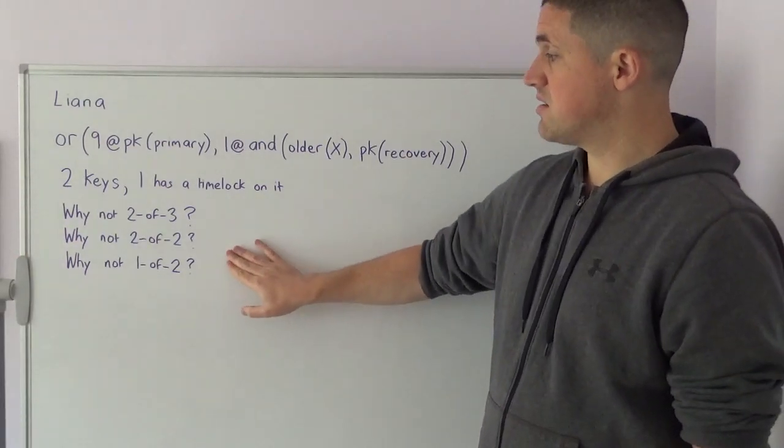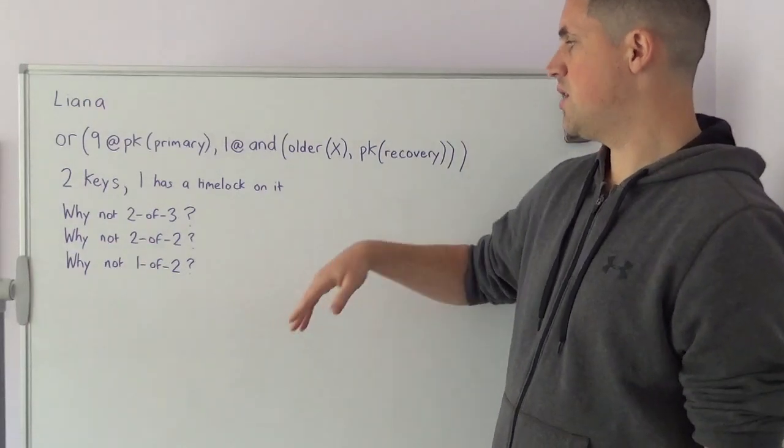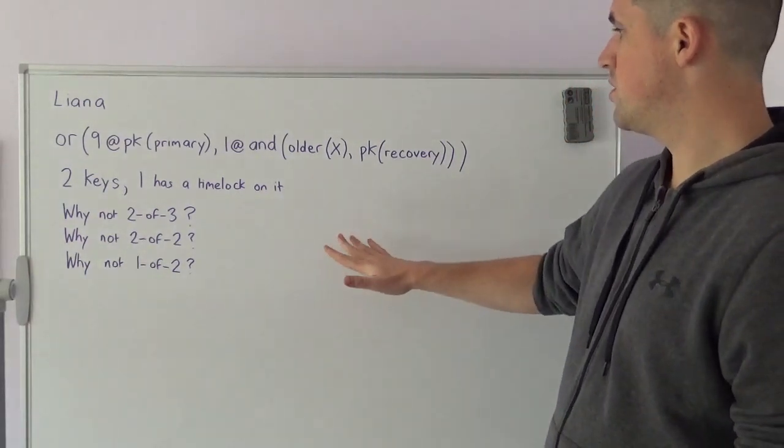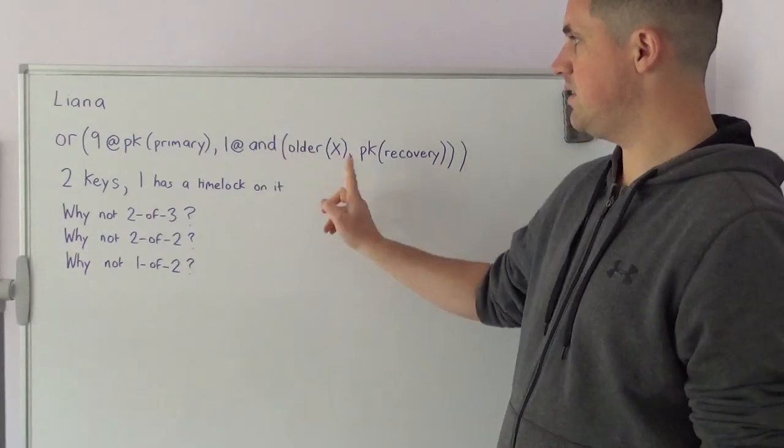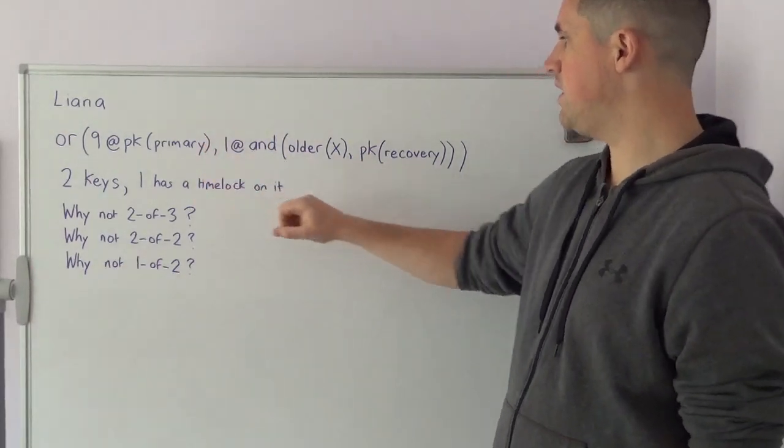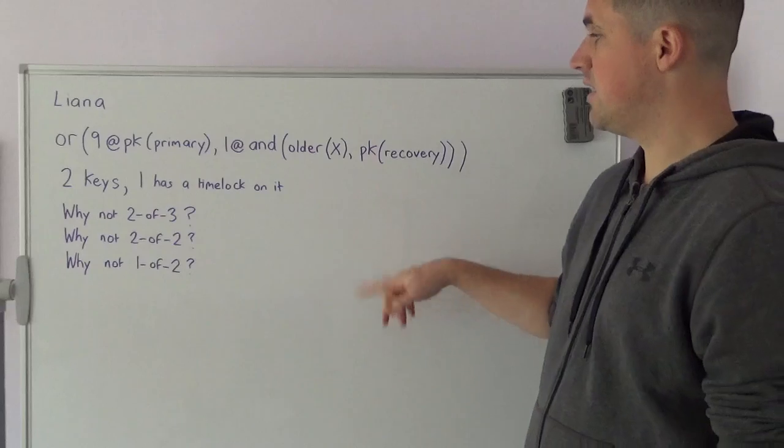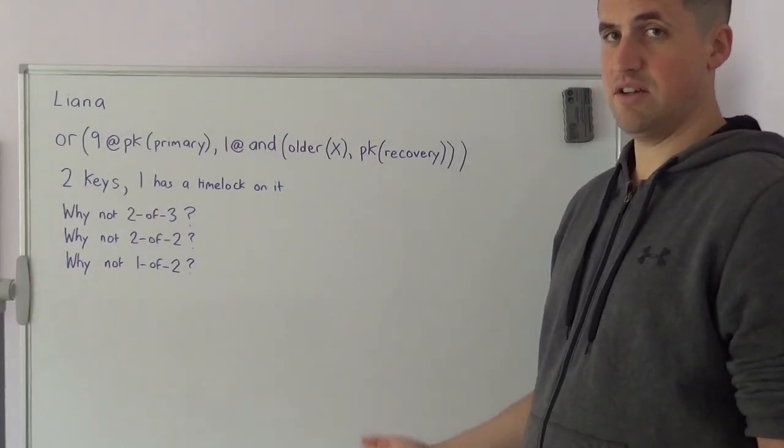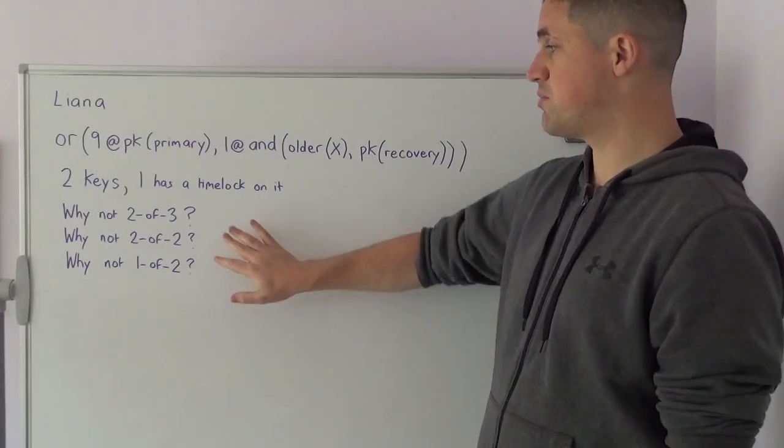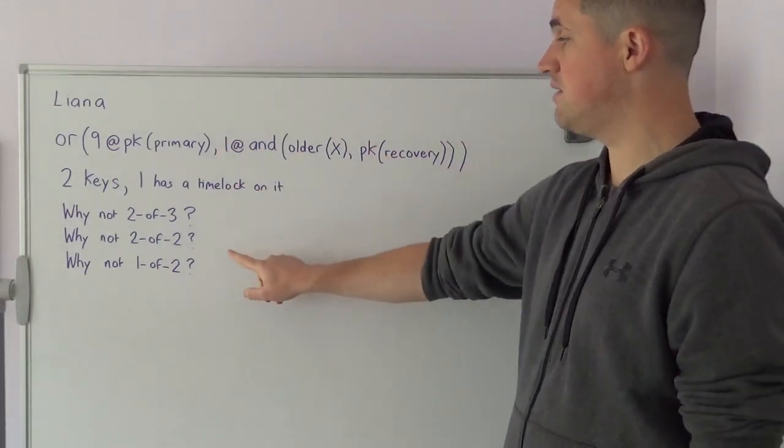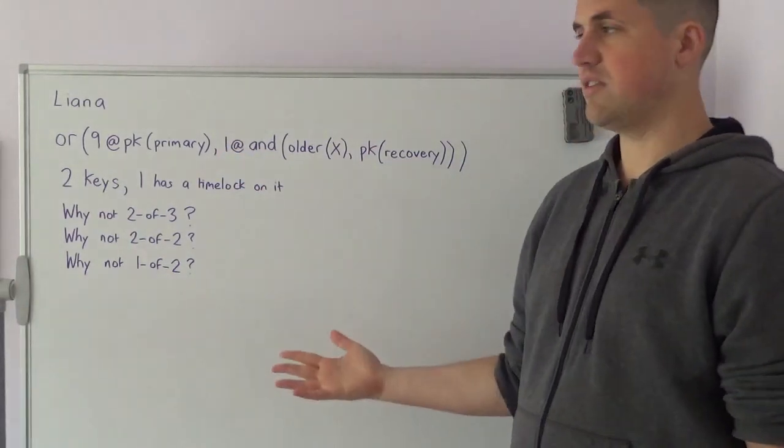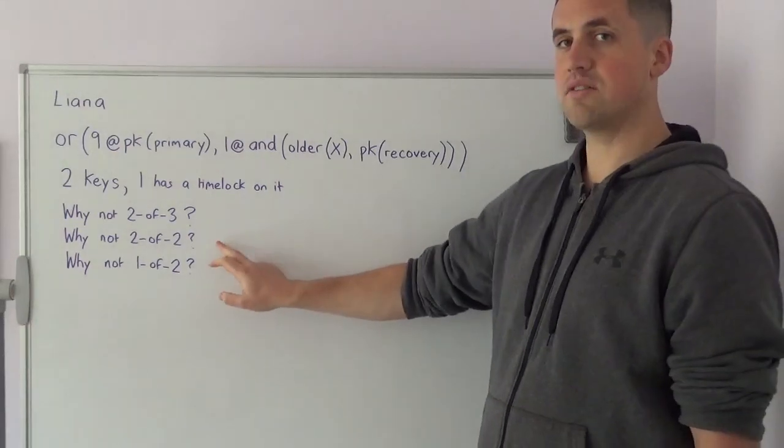In comparison to a 2 of 2, with a 2 of 2, if you lose one of the keys, if you lose your primary key or your recovery key, your funds are then locked up forever in a 2 of 2 case. Because you have to produce two signatures associated with these two different keys to be able to move your funds. You lose one, your funds are locked up forever.